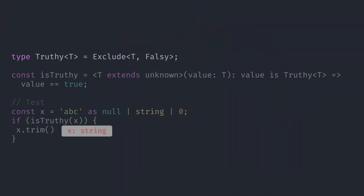Before we wrap this up, I want to show you something. There is a limited list of falsy values, but truthy values on the other hand are infinite — all values that are not falsy are truthy. So how would you make a type guard for truthy values? The trick is to exclude the falsy types. Instead of checking if our value is truthy, we check that it's not falsy. I use this trick a lot and we will see it again in future videos.